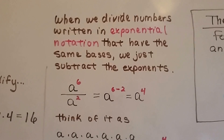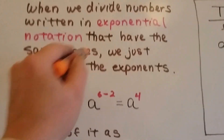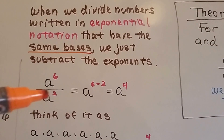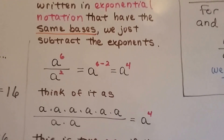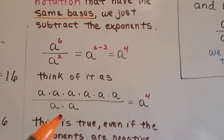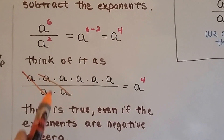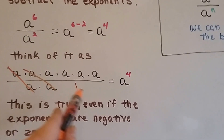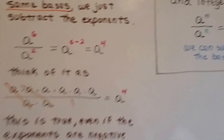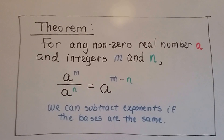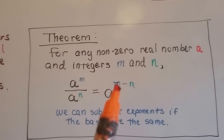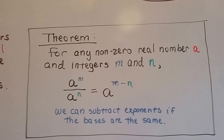When we divide numbers written in exponential notation that have the same bases — and they must have the same bases — we just subtract the exponents. So if we have a to the sixth over a to the second, we do six minus two, which is four: a to the fourth. Here's our second theorem: for any non-zero real number a and integers m and n, a to the m divided by a to the n equals a to the m minus n. We subtract exponents when the bases are the same.